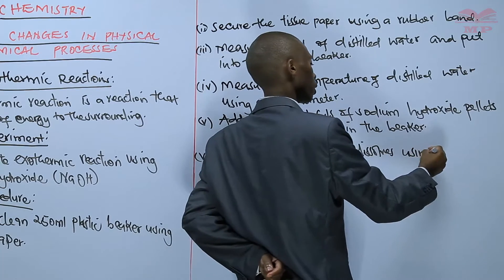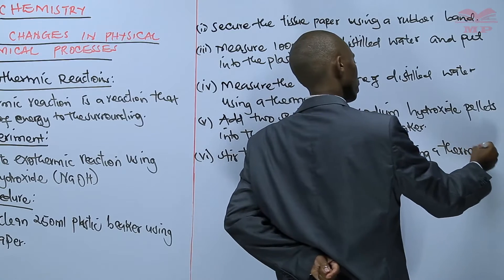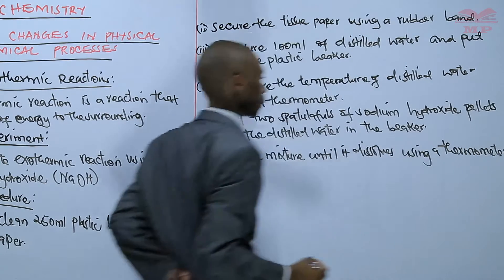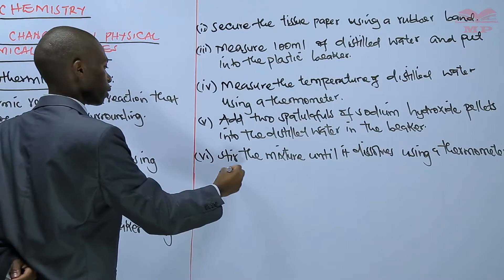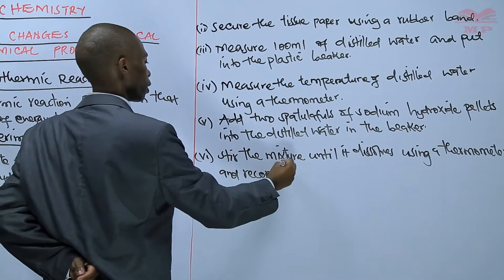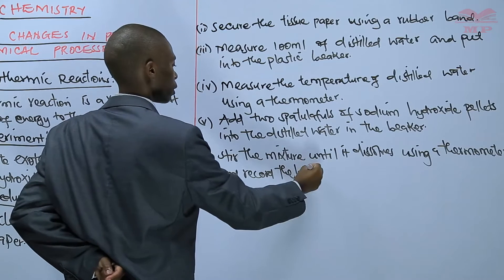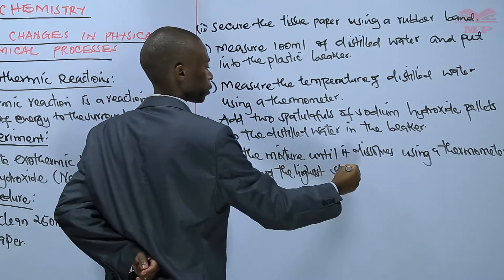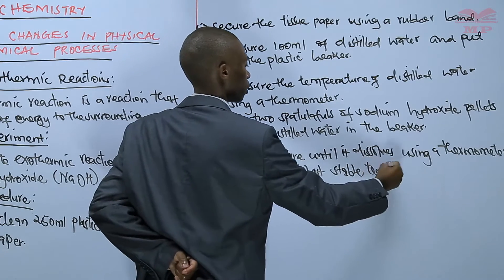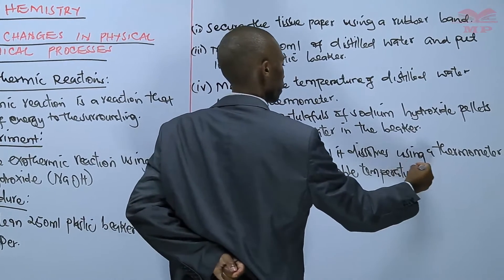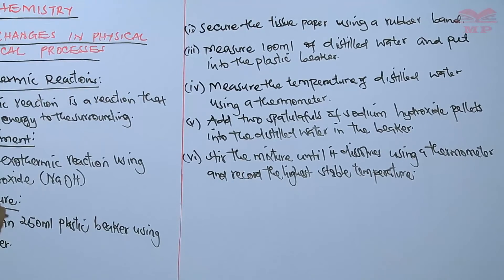Stir the mixture using a thermometer and record the highest stable temperature. That is the procedure you are supposed to follow to carry out this experiment on demonstrating exothermic reactions.